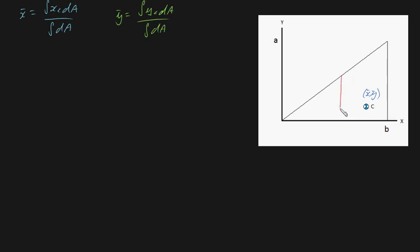Likewise, we could have chosen this value of da, being a long vertical strip. That could be da if we wanted to. Likewise, you could choose this. There are many different ways you can evaluate da.